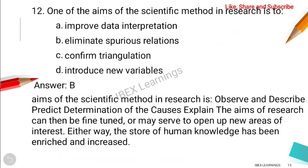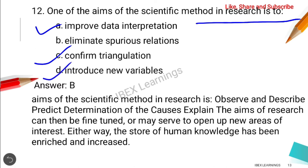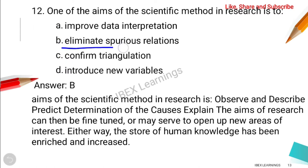The next question is: one of the aims of the scientific method in research is — improve data interpretation, confirm triangulation, introduce new variables, or eliminate spurious relations. Basically, the scientific method aims to eliminate spurious relationships. So the correct answer is D.